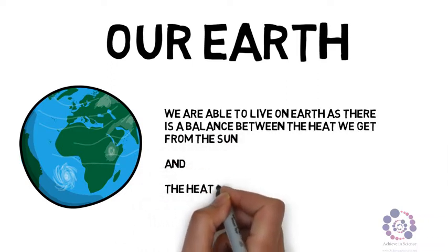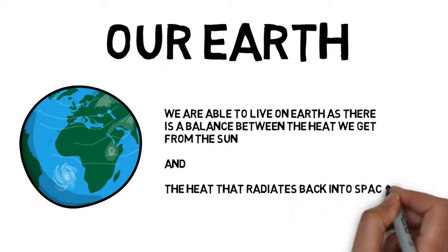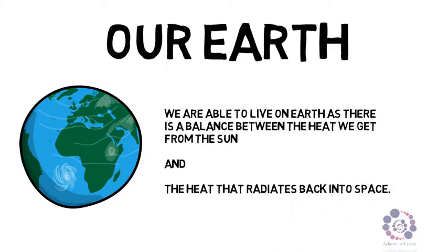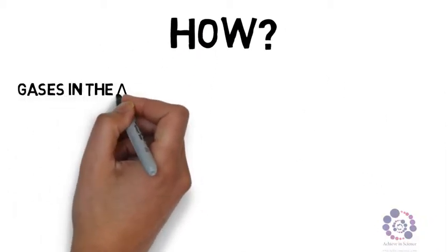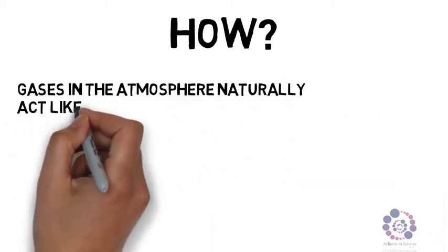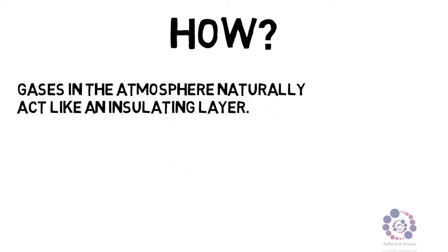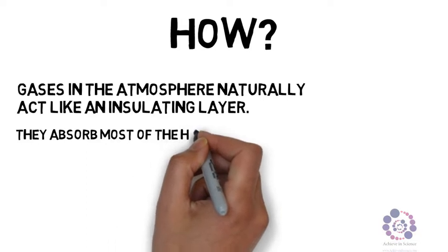But why is this so? We need to know about this in a bit more detail. How is this possible? Well, gases in the atmosphere naturally act like an insulating layer, kind of like a blanket. They absorb most of the heat that would normally radiate out into space and at the same time they re-radiate it back in all directions.